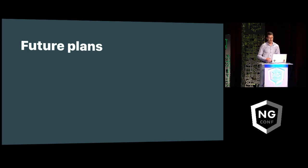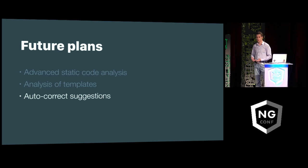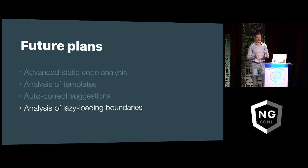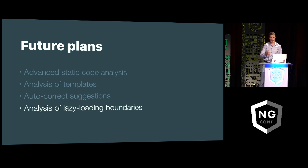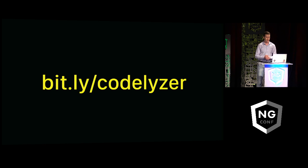We are also planning to do more than just linting. Our plans include more advanced static code analysis, and we already have some prototypes. We are planning to introduce analysis of templates — using the Angular template parser we'll get the output AST and analyze it. We're also planning to add autocorrect suggestions, so if we verify that you're not following a best practice, we'll give you a couple of options and when you choose one, your code gets automatically refactored. Another plan is to add analysis of lazy loading boundaries — when you have lazy async route definitions and a transitive dependency inside one of those lazy loading boundaries that violates the lazy loading of your application, we're going to raise a warning. We'd also love to get your feedback through this Google form — tell us what you'd like to see inside of CodeLyzer.